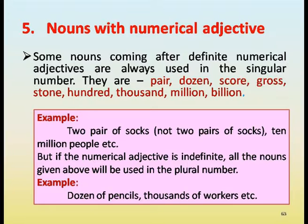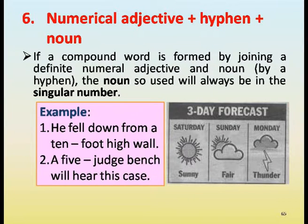But if the numeral adjective is indefinite, all the above nouns will be used in the plural number. Examples: dozens of pencils, thousands of workers, etc. Numerical adjective plus hyphen plus noun: if a compound word is formed by joining a definite numerical adjective and noun by a hyphen, the noun will always be used in the singular. Example: He fell down from a ten-foot high wall (not ten feet high wall). A five-judge bench will hear this case.